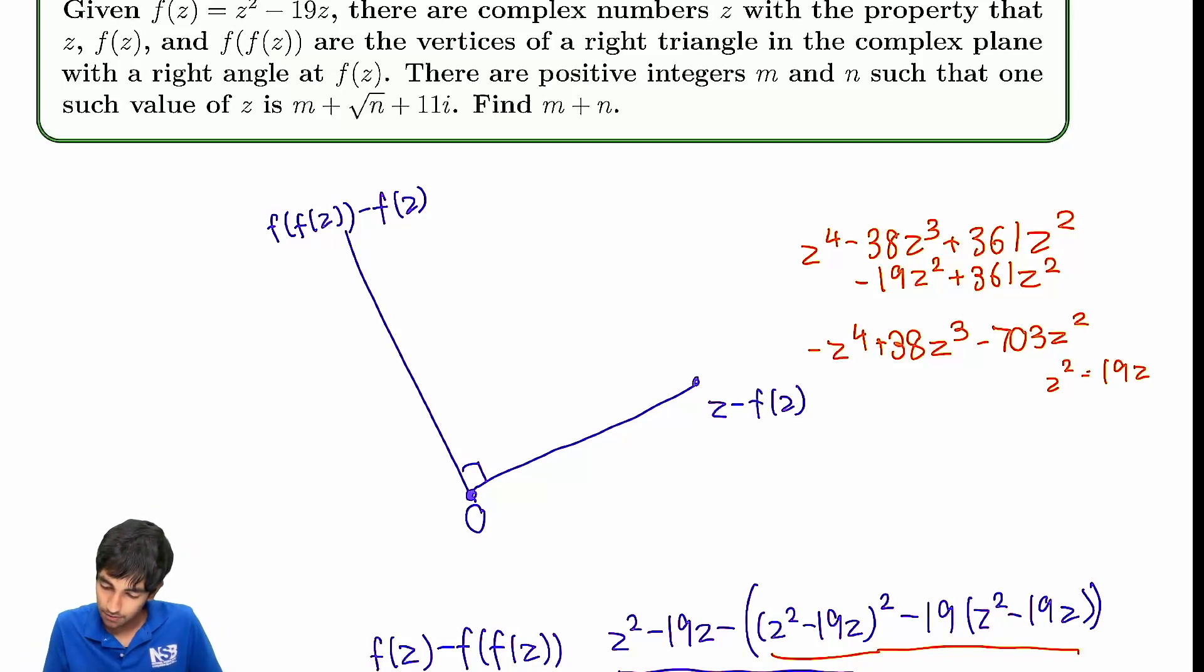Let's continue here. So now we just have to add this, and then we have negative z to the fourth plus 38z cubed minus 702z squared minus 19z.